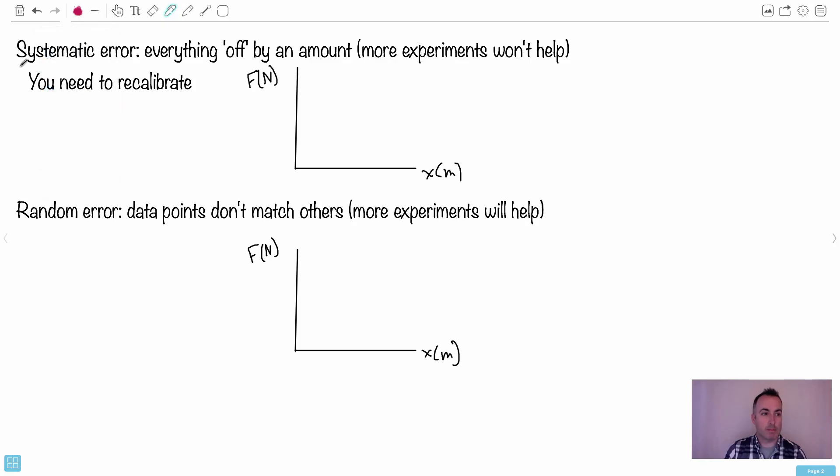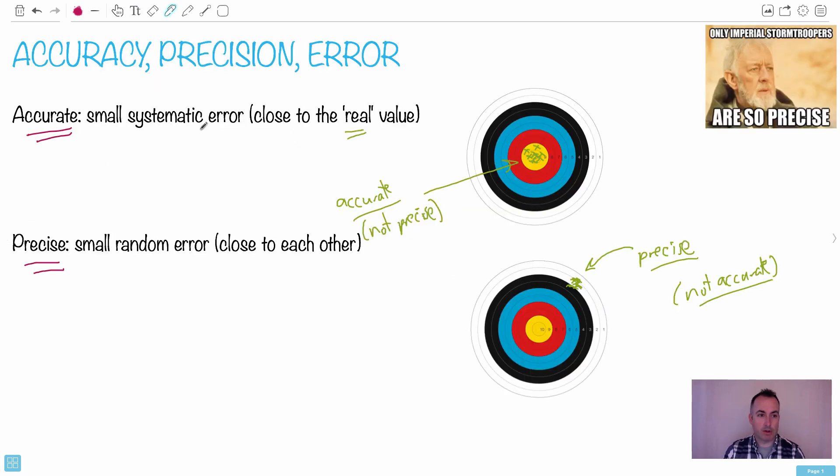Systematic error. What do we mean by a systematic error? It means that everything is off by a certain amount. So in this example back here, I said there's a small systematic error. In other words, things weren't off by very much.